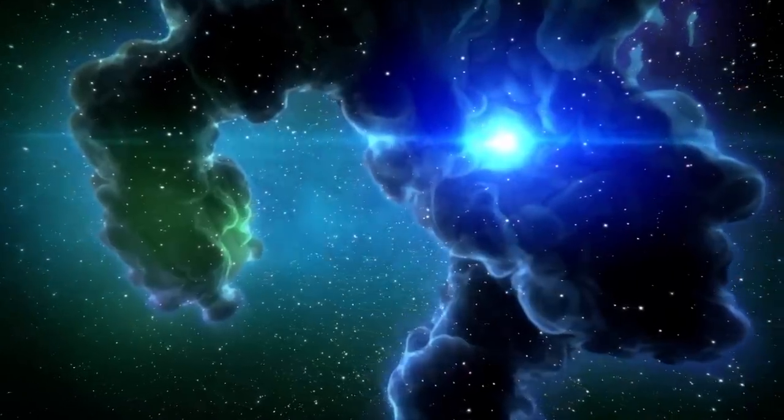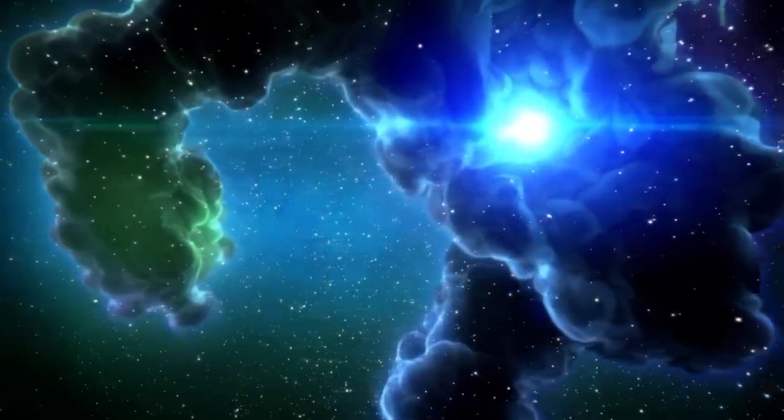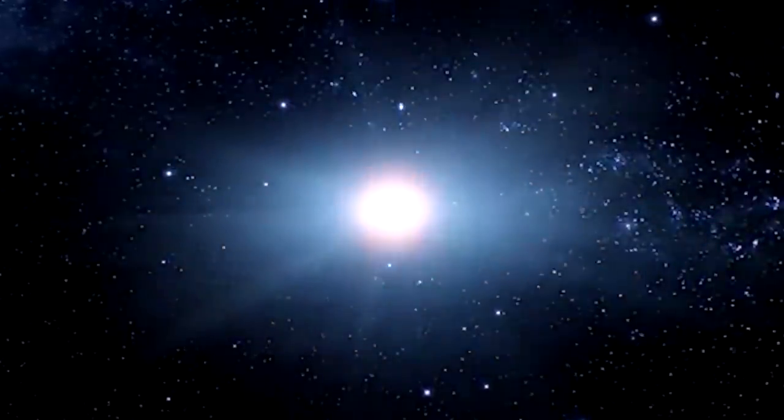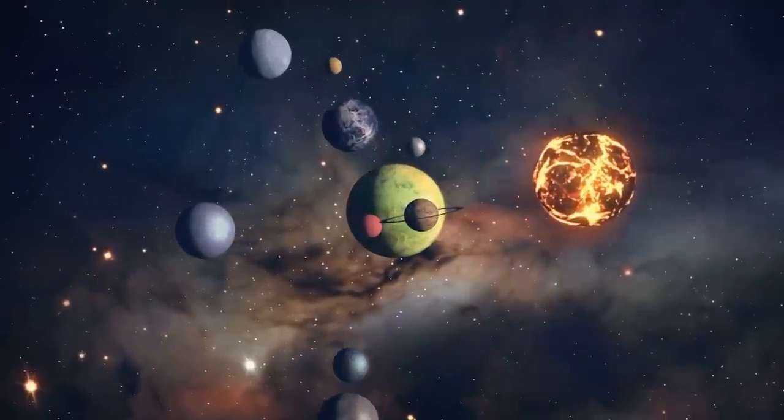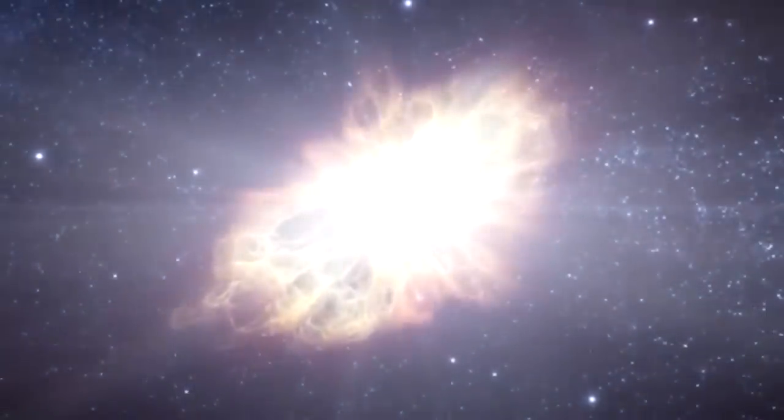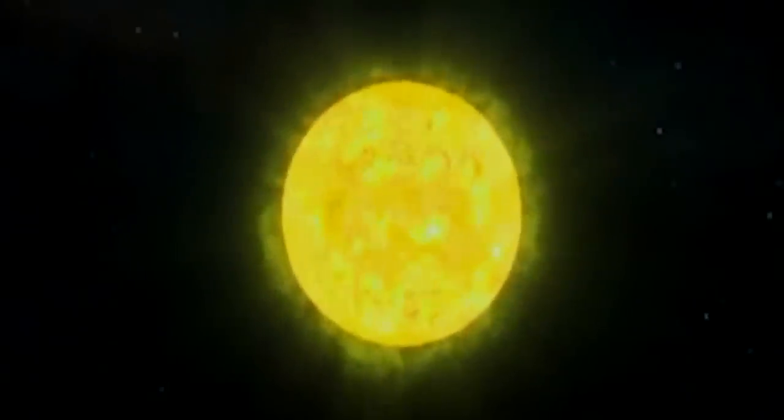And for our yellow dwarf star, known as Sol, when it gets to a certain age, it will trigger an explosion that will turn into a supernova. That supernova will grow so large that it engulfs the planet Mercury, Venus, Earth, and possibly Mars, and the new supernova will drastically change the complexion of our entire solar system, and nothing will be as it was before.